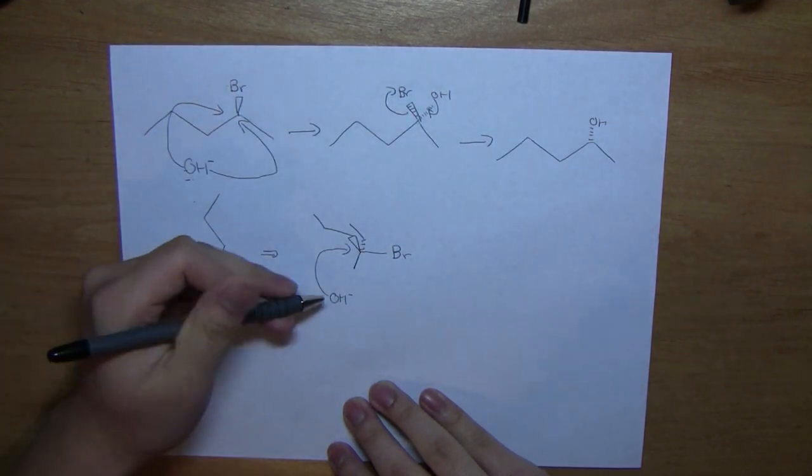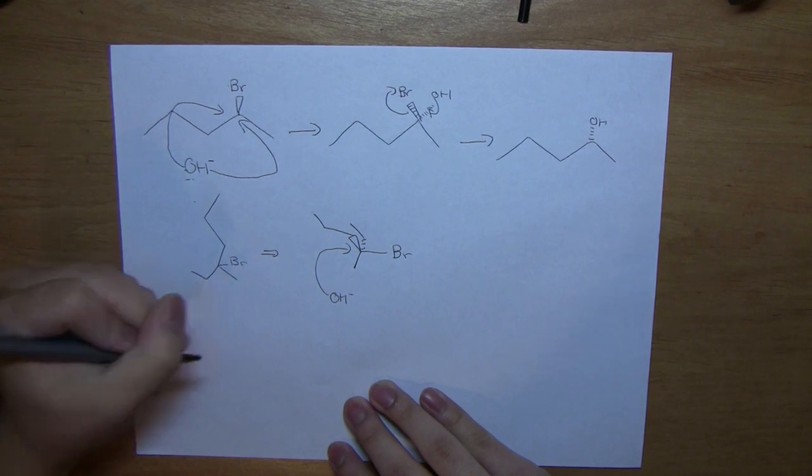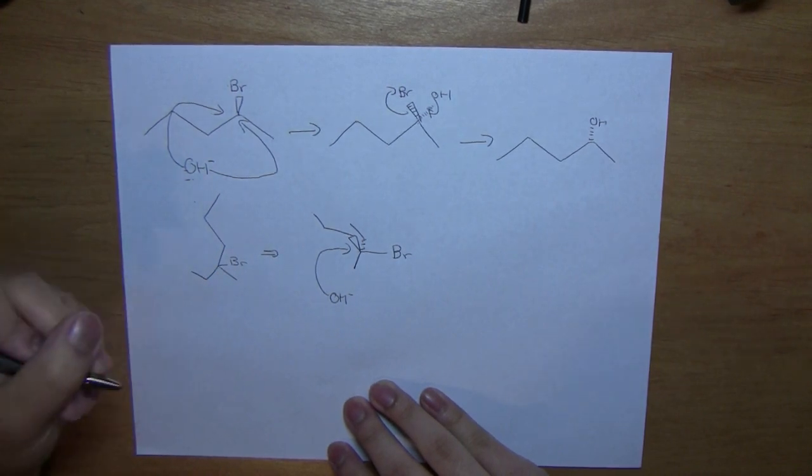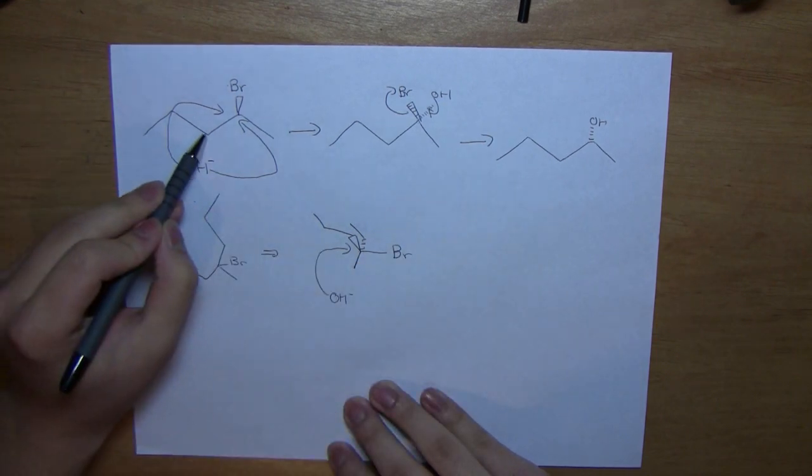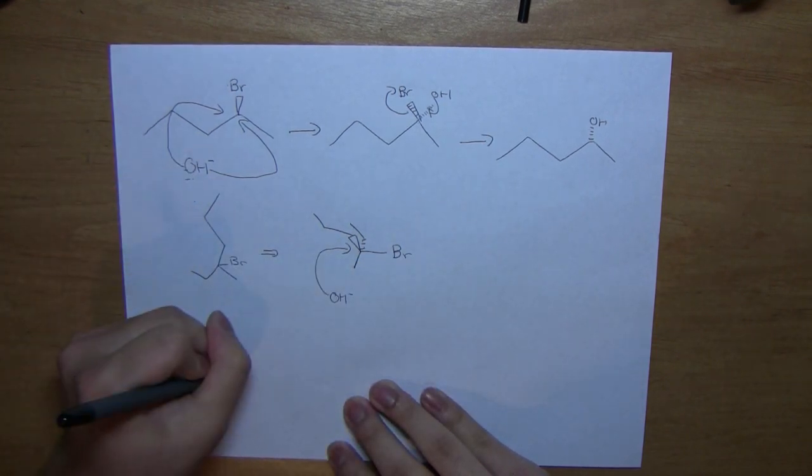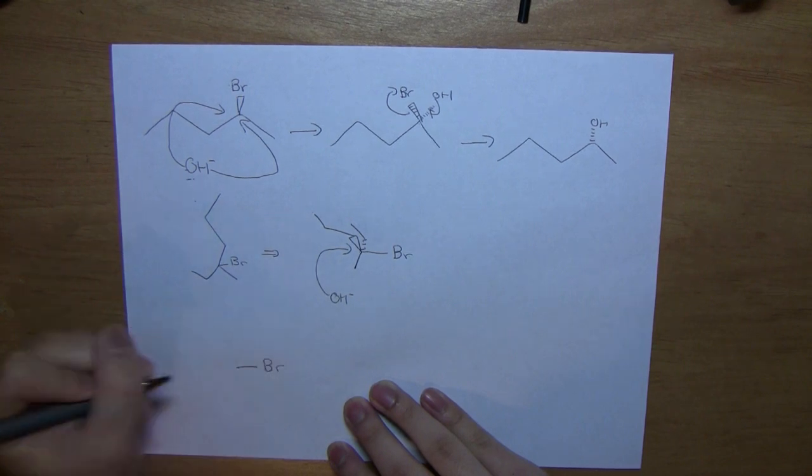Now, that's why SN2 reactions only happen on secondary and primary carbons because it's much more easy for the hydroxide to attack. So let's draw this compound here in 3D. So let's do the same thing, which we have the bromide coming off to the right.